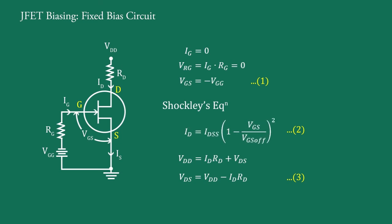Substituting the value of ID from this equation, we get VDS. Therefore, from equation 2 and 3, operating point Q (VDS, ID) can be determined for the given fixed bias voltage VGS equal to minus VGG.